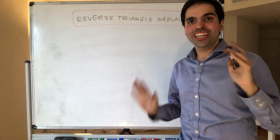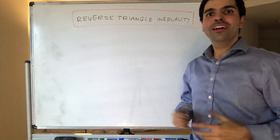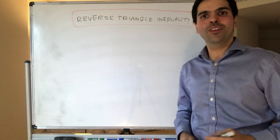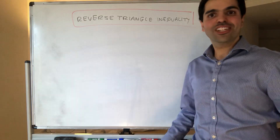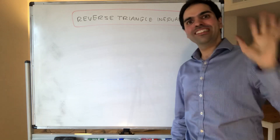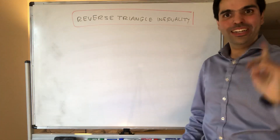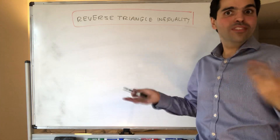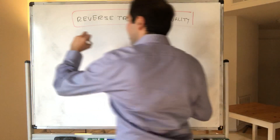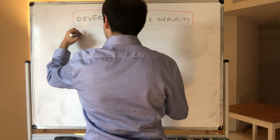Thanks for watching. Today I would like to prove the reverse triangle inequality, which sounds like a useful identity, but it's not as useful as you think, because it always goes the wrong direction, except for some special cases.